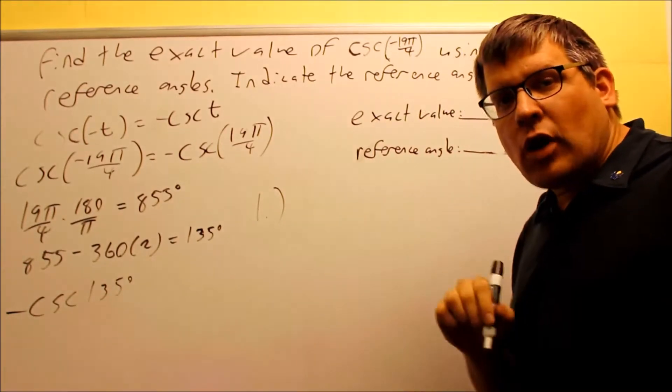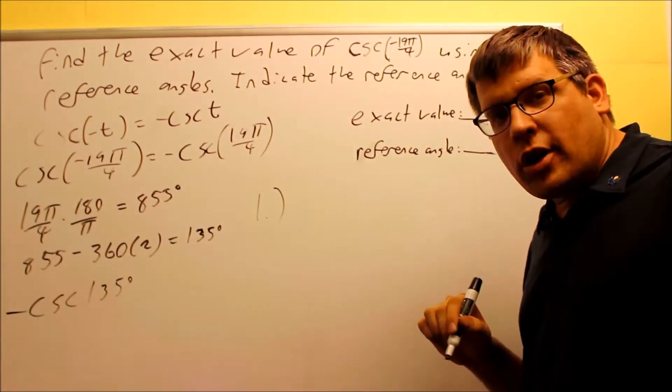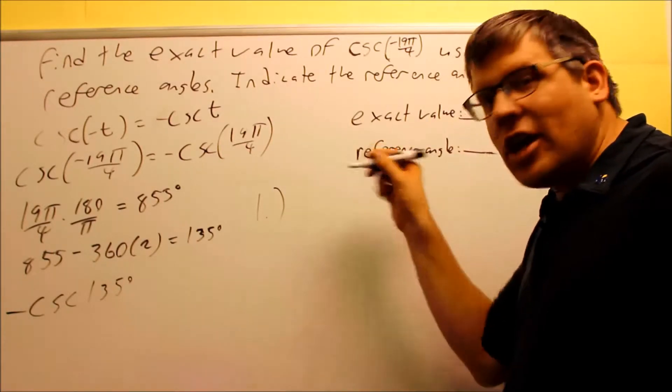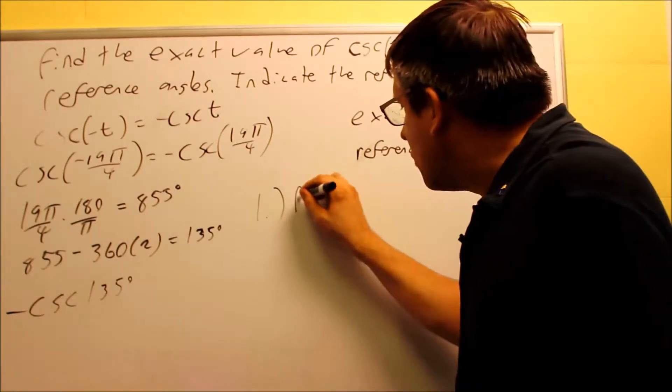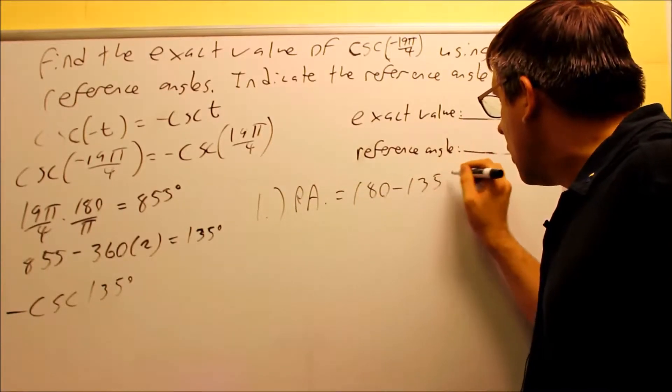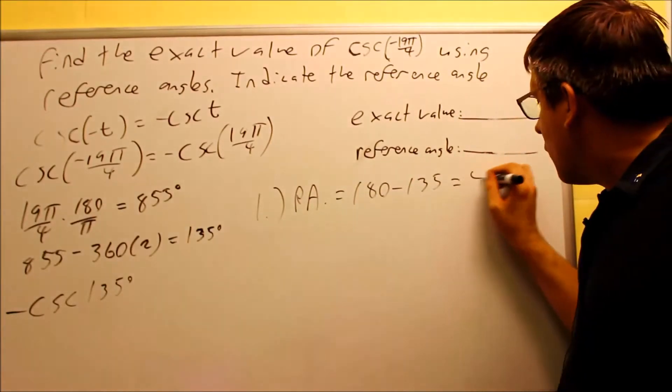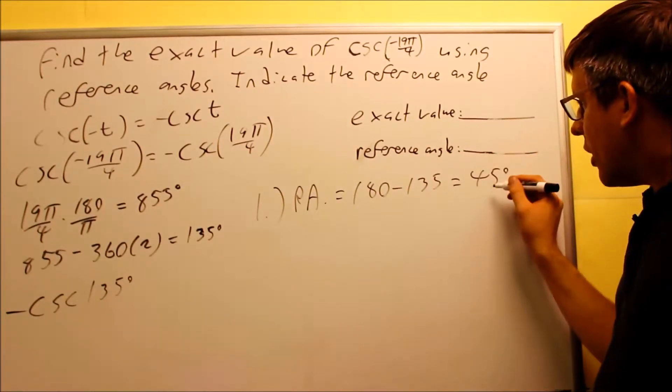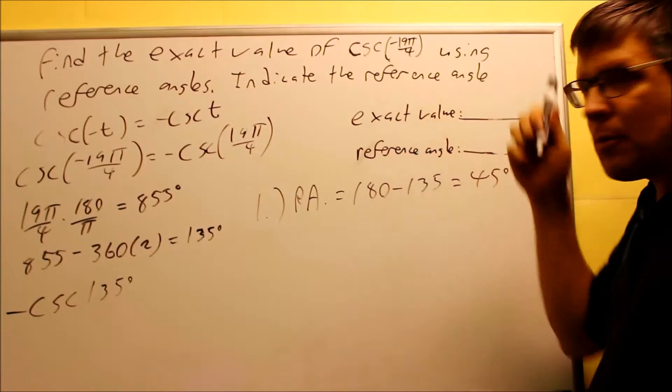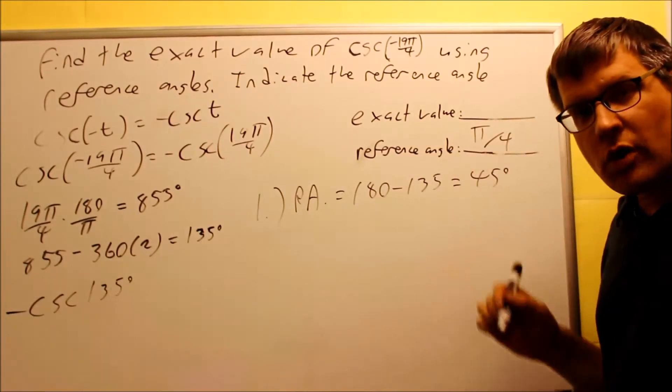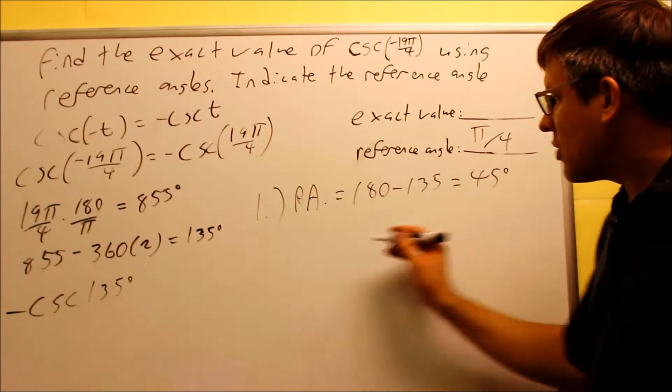When I do the three steps for these right here, I'm going to be using 135 degrees. 135 would be in the second quadrant because it's between 90 and 180. So I know that the reference angle formula there is going to be 180 minus 135. So reference angle is equal to 180 minus 135. That's going to give you 45 degrees as your reference angle.